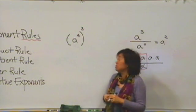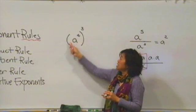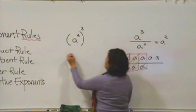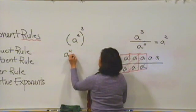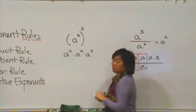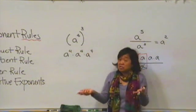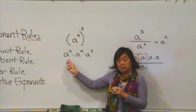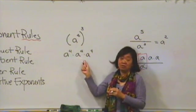So, again, what would this mean? This would mean we're going to take a to the fourth and multiply it by itself three times. So, a to the fourth times a to the fourth times a to the fourth. And based on what we just talked about, think about what we have here. We have four a's here, four more, four more.